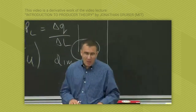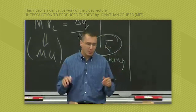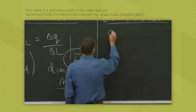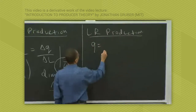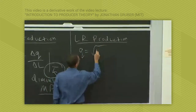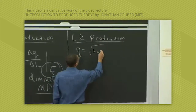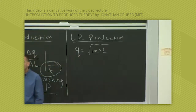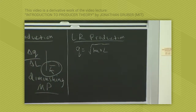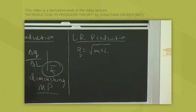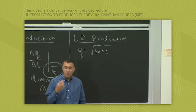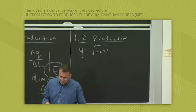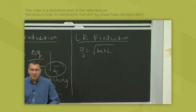For now, let's think about the parallels with consumer theory and consider a production function: q = √(K × L). That's the same functional form used with pizza and movies, where utility was √(pizza × movies). Now we say what you produce of your good is √(K × L).